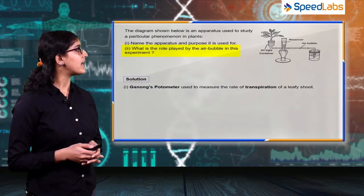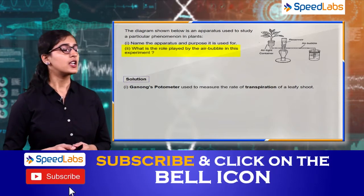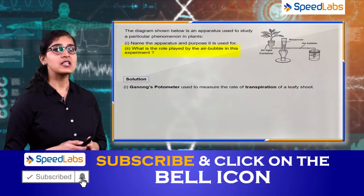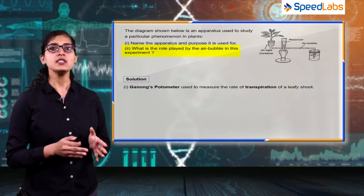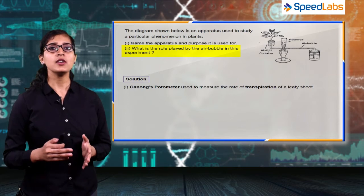The next question is: what is the role played by the air bubble in this experiment? You can see in this diagram there is a capillary having an air bubble inside it. The change in position of that air bubble in a particular time will give you the rate of transpiration.